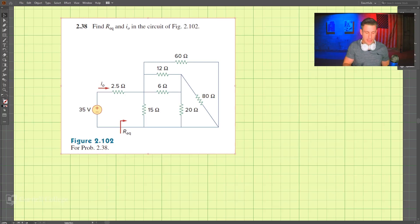Okay, so problem 2.38 here, and we are looking to find the equivalent resistance, Req, the equivalent meaning equal, and the current I0, I0 right here. Okay, so we need to take this step by step here.